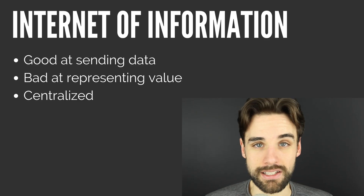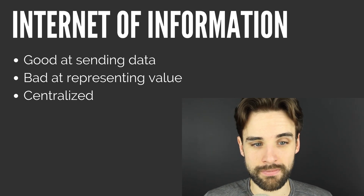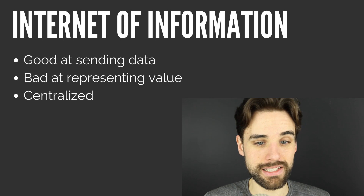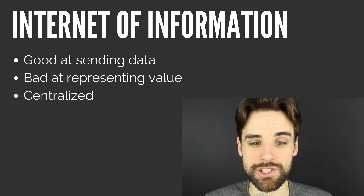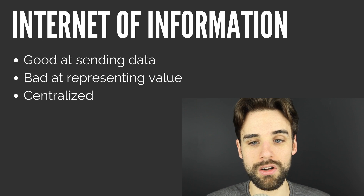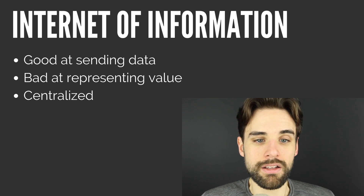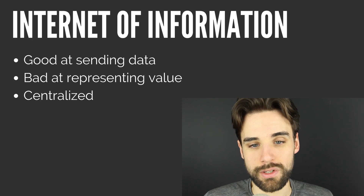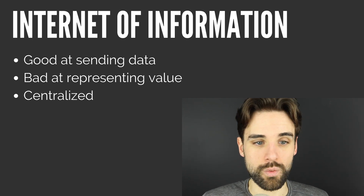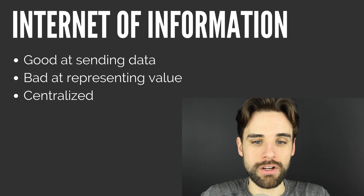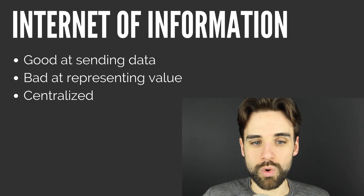Let's look at the internet as it exists today. You could call the internet today the internet of information. That's because this is where we send data or information back and forth between our devices that are connected to servers. This information can be emails, status updates on a social network, or even payments that we make when we log into our bank account and pay a bill. The current internet of information is centralized because all of this sending and receiving and doing stuff with data is handled by a central server or a group of servers, controlled by single entities — usually organizations or businesses.